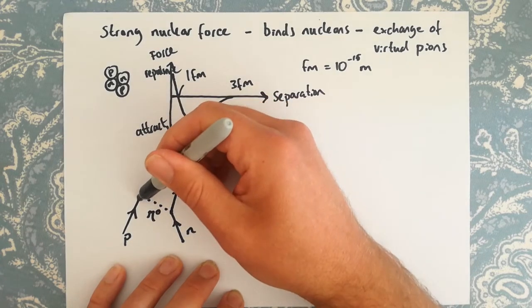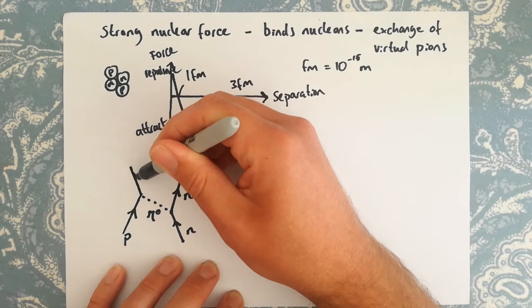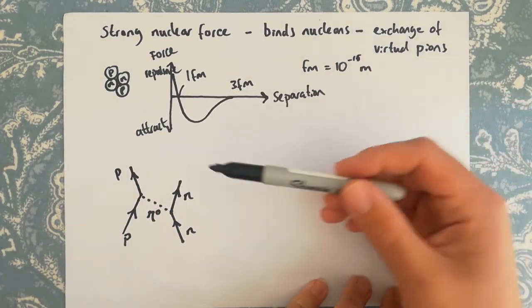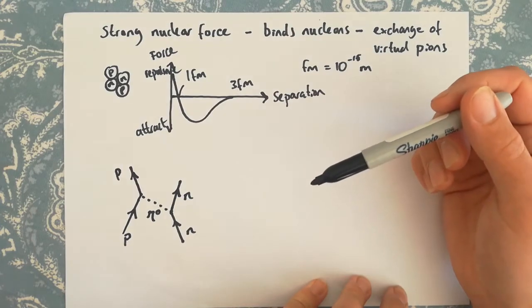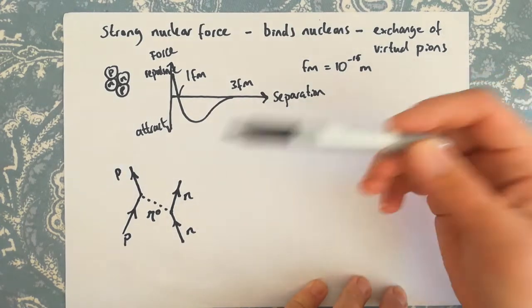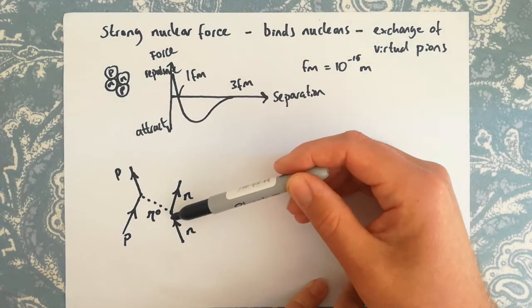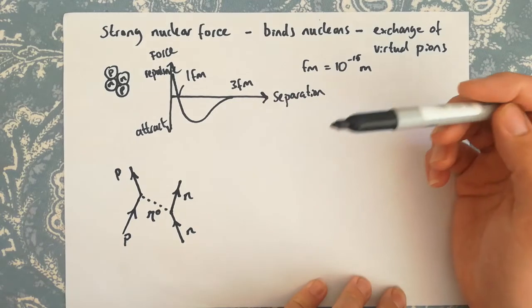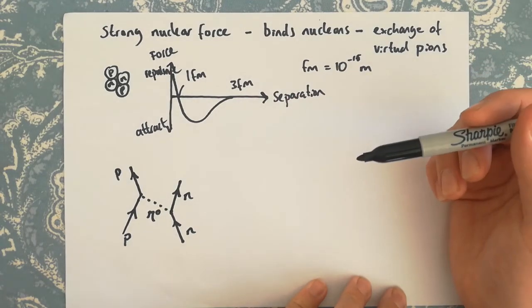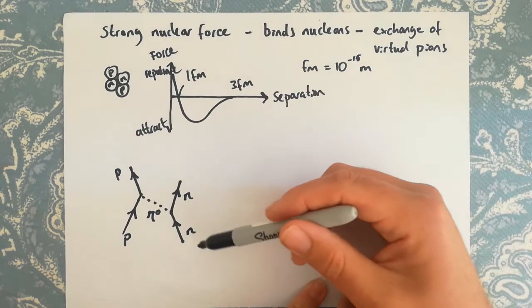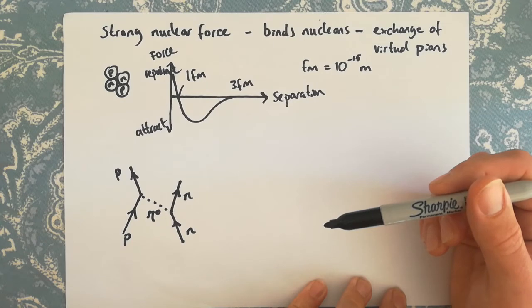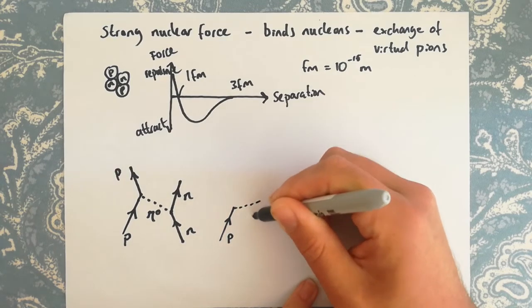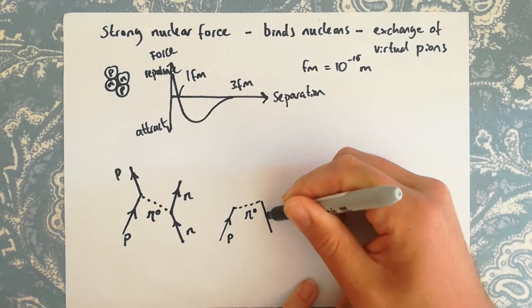We have a neutron in the same vicinity as a proton — this is happening within a nucleus. The neutron emits a neutral pion, pi-zero. We draw a change in direction to represent the transfer of momentum from the neutron to the pion. The pion is received by the proton, and we draw another change in direction. Remember, these diagrams are not designed to show anything realistic about direction or speed — we're just showing that momentum is being transferred between the particles.